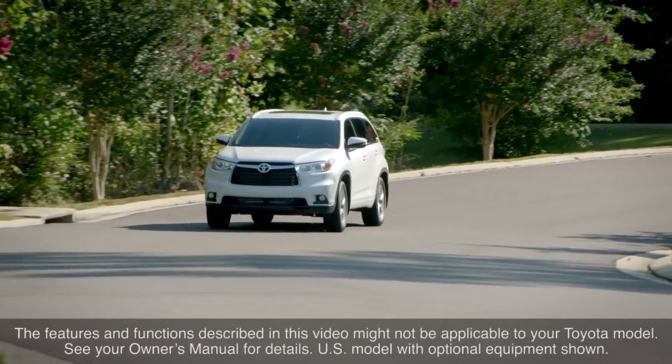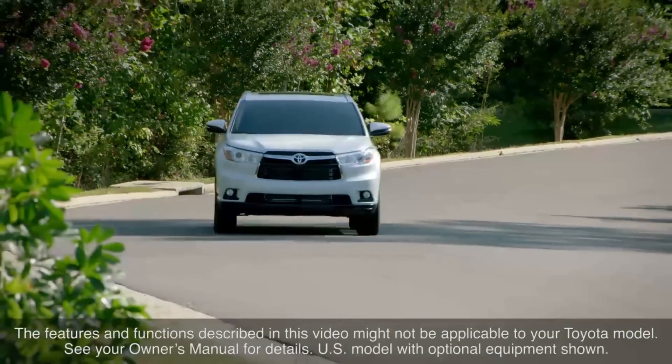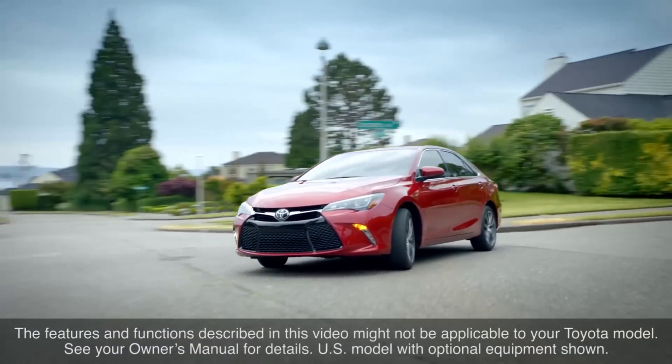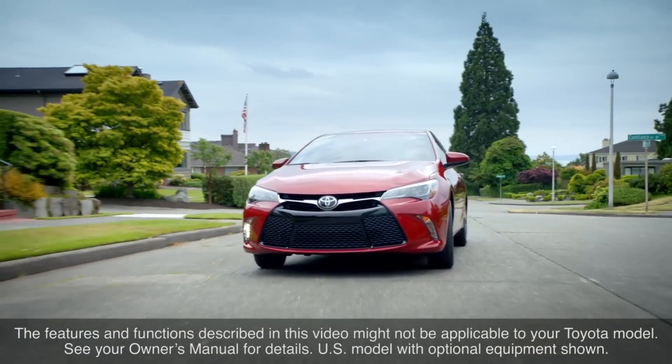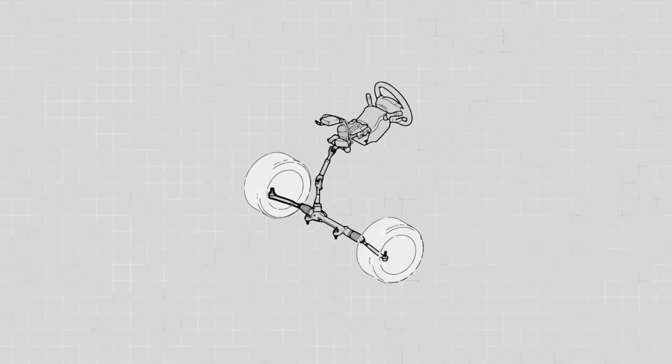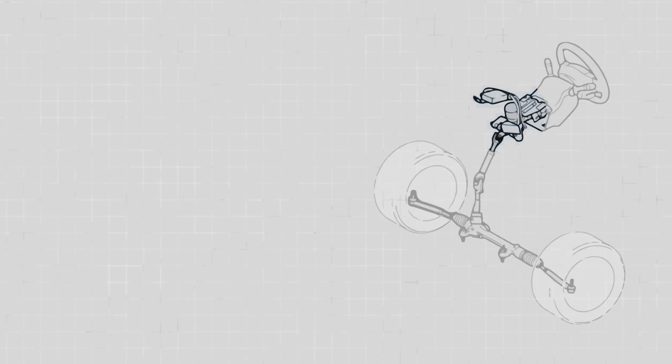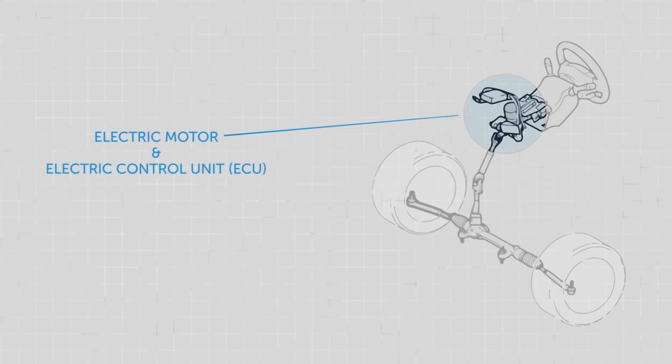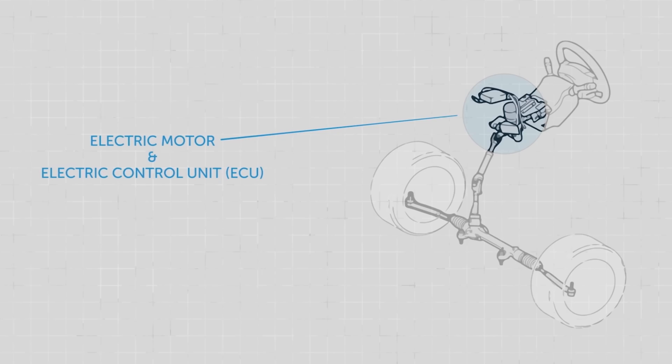Many Toyota models are equipped with electric power steering, often referred to as EPS. All components of the EPS, including its electric motor and electronic control unit, are integrated into the steering column assembly, making for a simple and compact system.